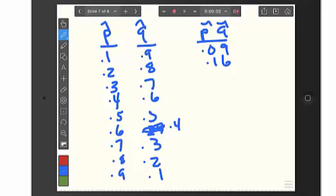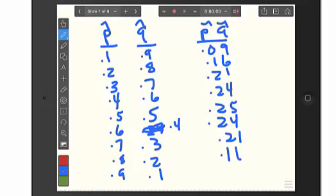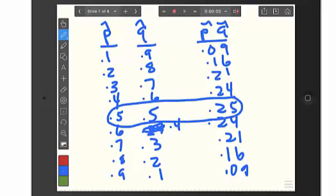And, the largest value you can get there is 0.25, and that occurs when both P hat and Q hat are 0.5.